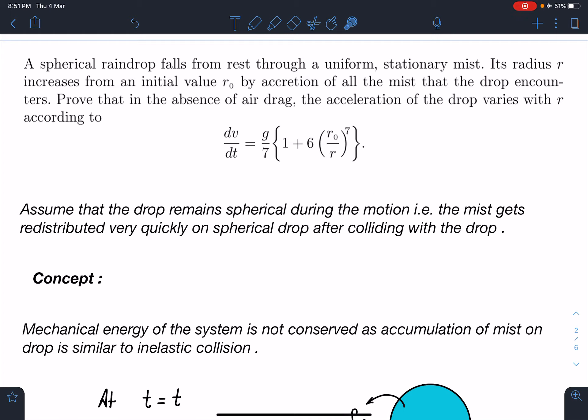Some assumption we have to make here. This assumption was not mentioned in the problem though I feel it was very much necessary. Assume that the drop remains spherical during the motion, and that means whatever mist it gets, it is redistributed very quickly on a spherical drop and that all the time the spherical shape is maintained.